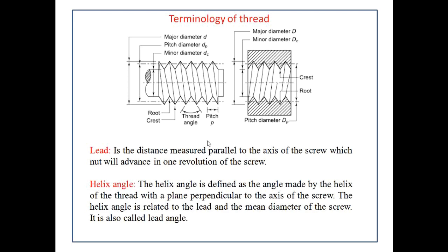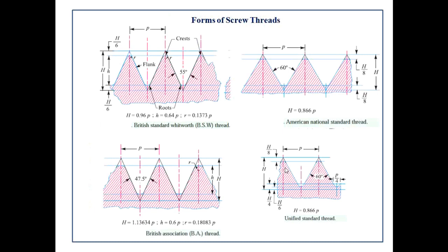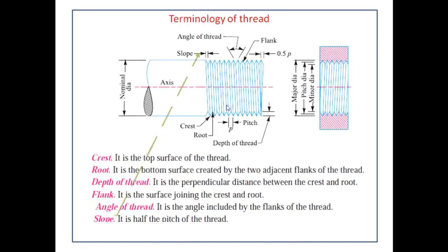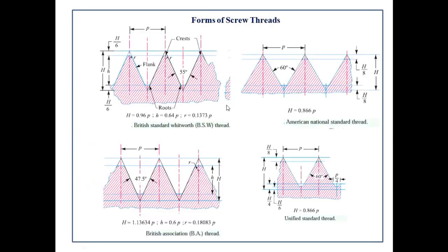If we unwind the screw at one position, the distance traveled by the nut — the height — is nothing but the lead of the screw. The helix angle is defined as the angle made by the helix of the thread with a plane perpendicular to the axis of the screw. The helix angle is related to the lead and the mean diameter of the screw and is also called the lead angle.